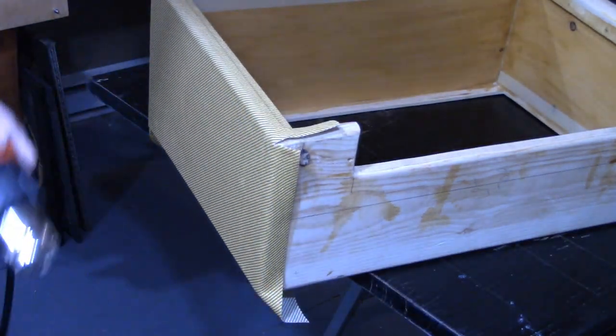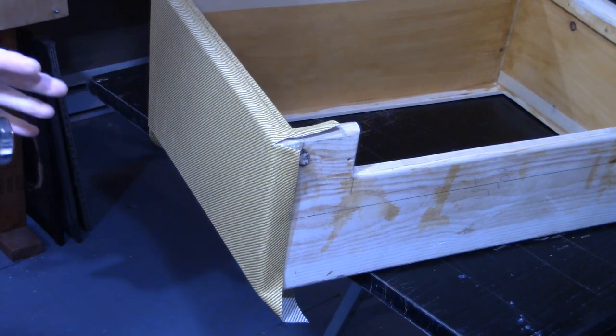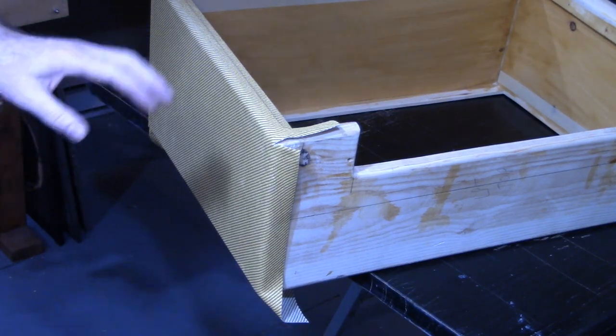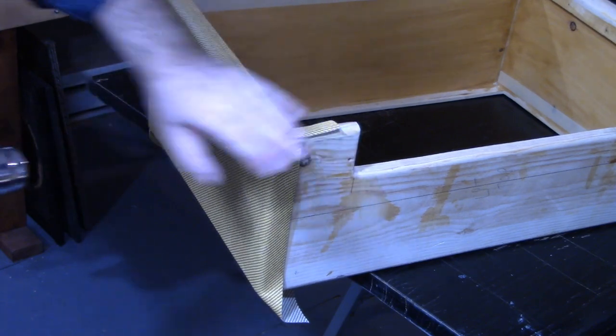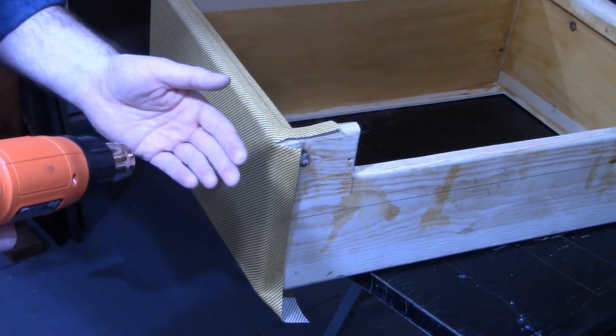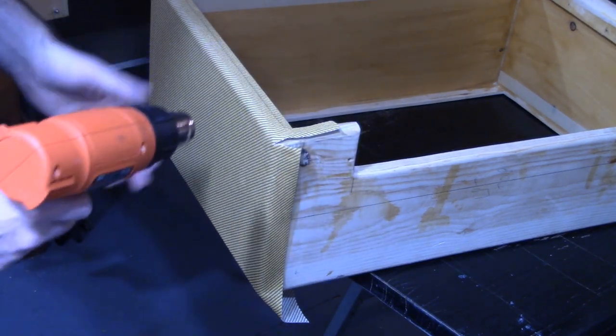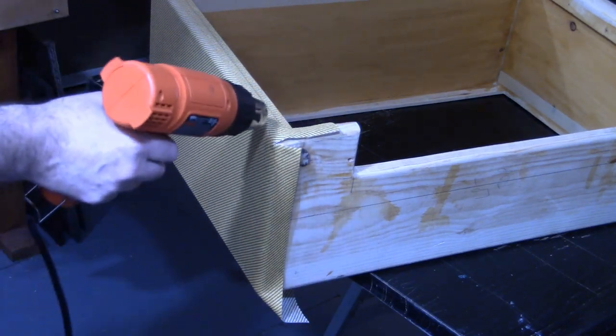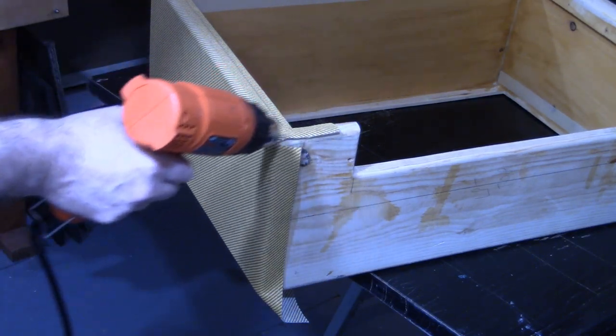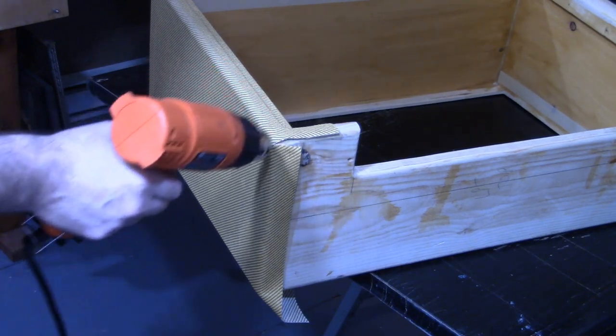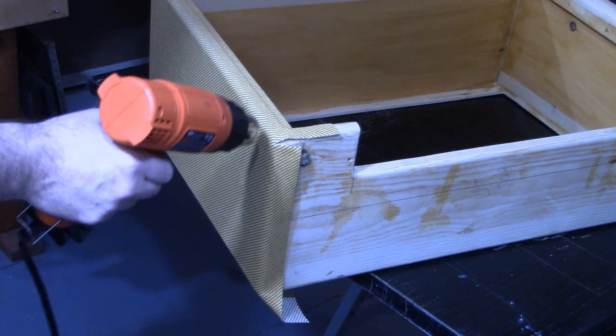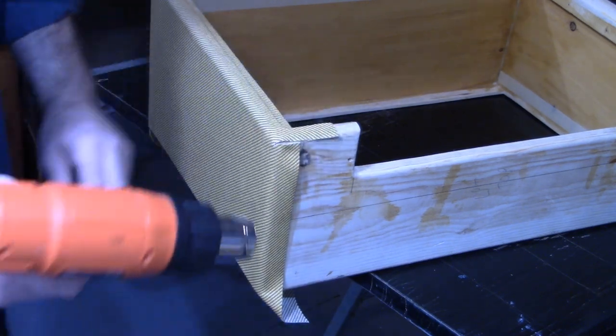And now the heat gun, kind of optional you can do this without a heat gun. But it really makes it set a lot better and makes the contour a lot nicer. Again, no hotter than I can stand on my hand otherwise it's too hot for the material. If you're using vinyl it will melt the vinyl if you apply too much heat so be really careful. Okay, about like that just so it's kind of warm.